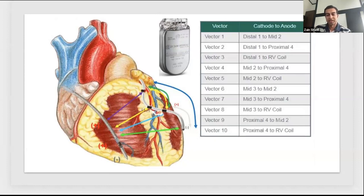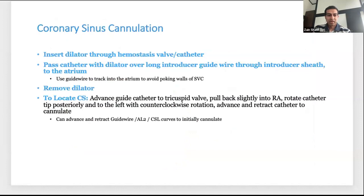When cannulating the coronary sinus: pass a wire down the SVC into the IVC, pass your delivery sheath with dilator over the wire into the atrium, remove the dilator. Your CS delivery sheath will point toward the RV. You can either directly pass toward the CS or go over a wire into the RV, pull back into the right atrium, rotating with counter-clockwise torque to guide it into the coronary sinus.